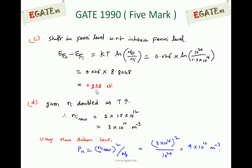For the last part, temperature is increased such that intrinsic carrier concentration doubles. The new intrinsic carrier concentration is 2 × 1.5×10¹⁶ = 3×10¹⁶ per meter cube. Using mass action law, minority carriers (holes in N-type) = Ni_new² / Nd = (3×10¹⁶)² / 10²⁰ = 9×10¹² per meter cube. When temperature increases, Ni increases, causing more covalent bonds to break and increasing electron-hole pairs, so minority carriers increase while majority carriers are not significantly affected.